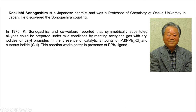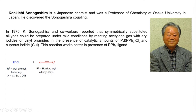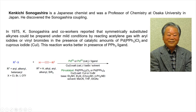This reaction works better in the presence of a ligand — specifically triphenylphosphine. Here, R1-X: R1 could be aryl, alkenyl, or heteroaryl, and X could be chloro, bromo, iodo, or triflate. The alkyne component where R2 could be hydrogen, alkyl, aryl, alkenyl, trimethylsilyl, or trialkylsilyl group. Palladium(0) or Palladium(II) catalyst can be used as a precatalyst and with the presence of ligand it can convert to Palladium(0).